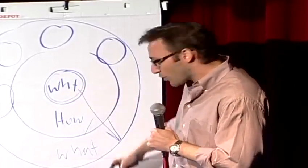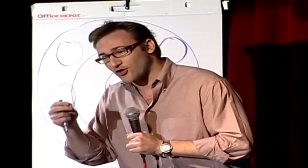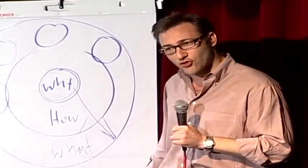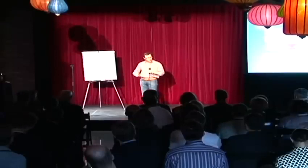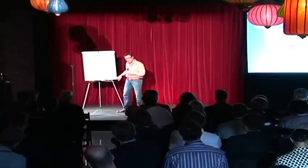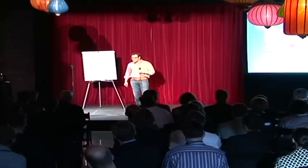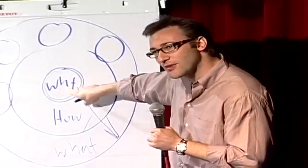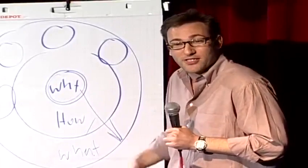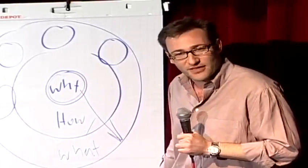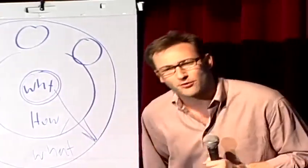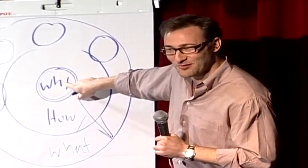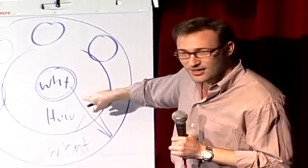When we communicate from the inside out, we're talking directly to the part of the brain that controls behavior, and then we allow people to rationalize it with the tangible things we say and do. This is where gut decisions come from. You know, sometimes you can give somebody all the facts and figures, and they say, I know what all the facts and details say, but it just doesn't feel right. Why would we use that verb? It doesn't feel right. Because the part of the brain that controls decision making doesn't control language. And the best we can muster up is, I don't know, it just doesn't feel right. Or sometimes you say you're leading with your heart or you're leading with your soul. Well, I hate to break it to you, those aren't other body parts controlling your behavior. It's all happening here in your limbic brain, the part of the brain that controls decision making and not language.